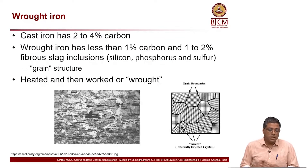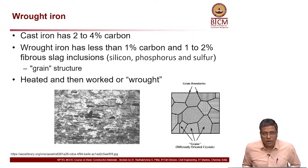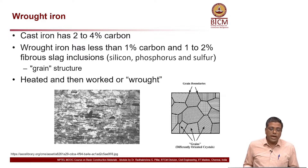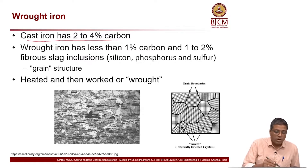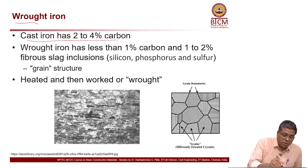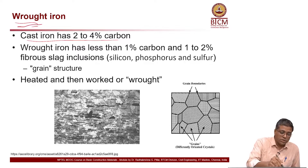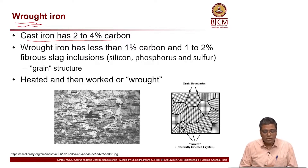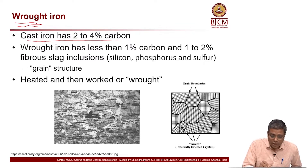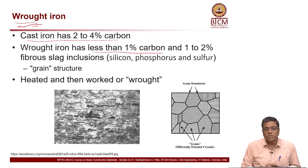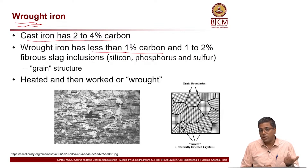Another product is raw iron. Where cast iron has 2 to 4 percent carbon, this is wrought iron which is slightly different in microstructure. It has less than about 1 percent carbon, whereas in cast iron you had 2 to 4 percent carbon.